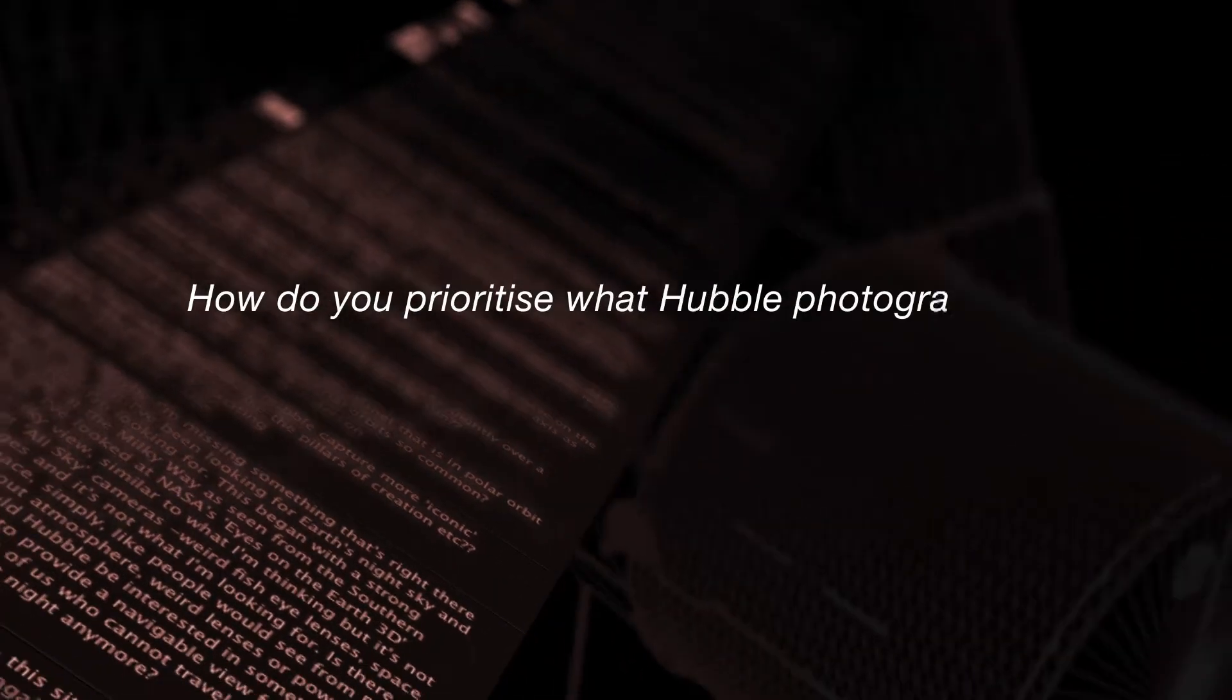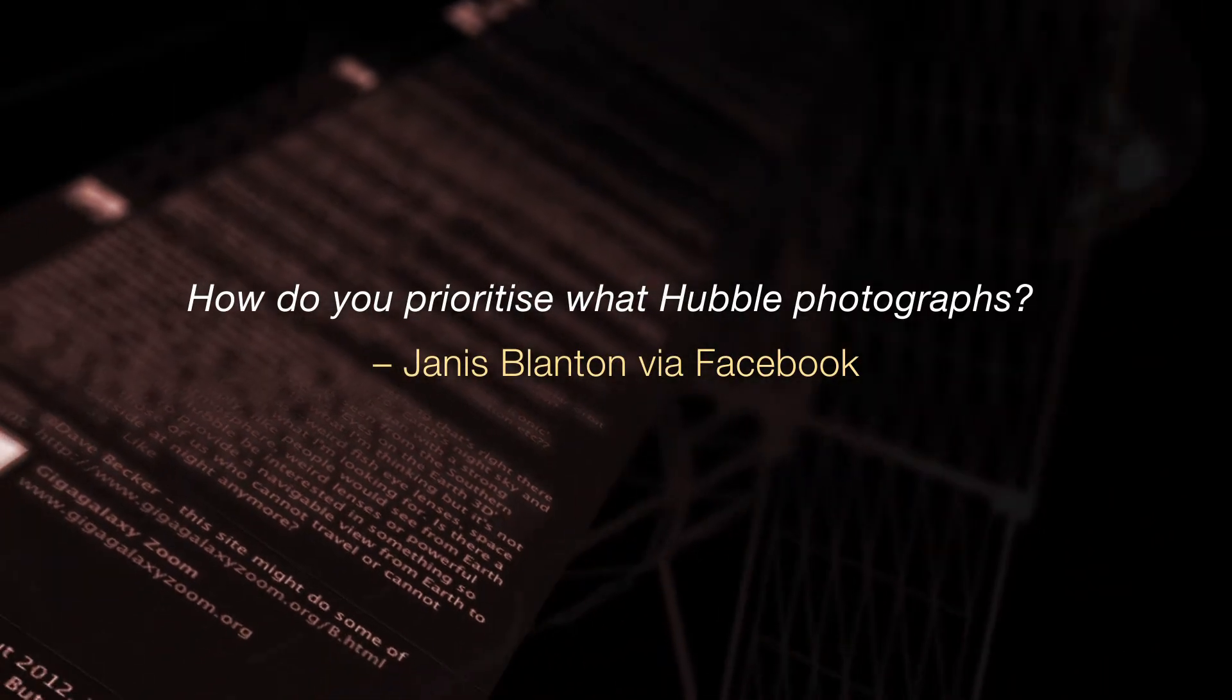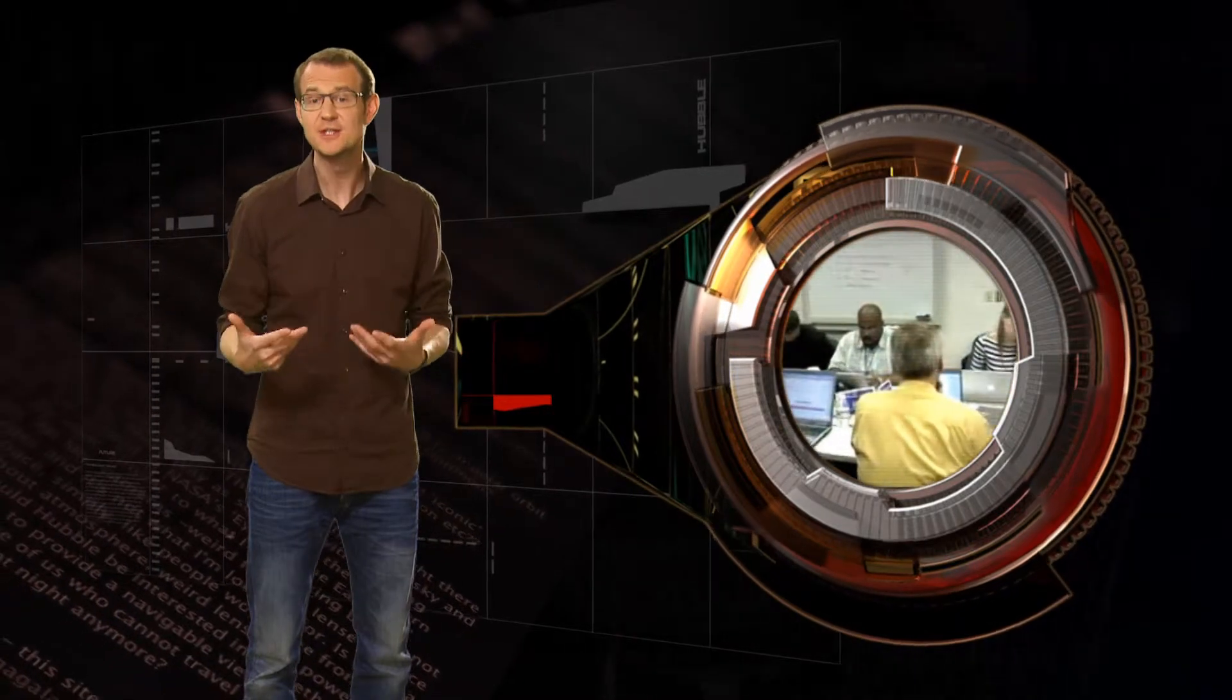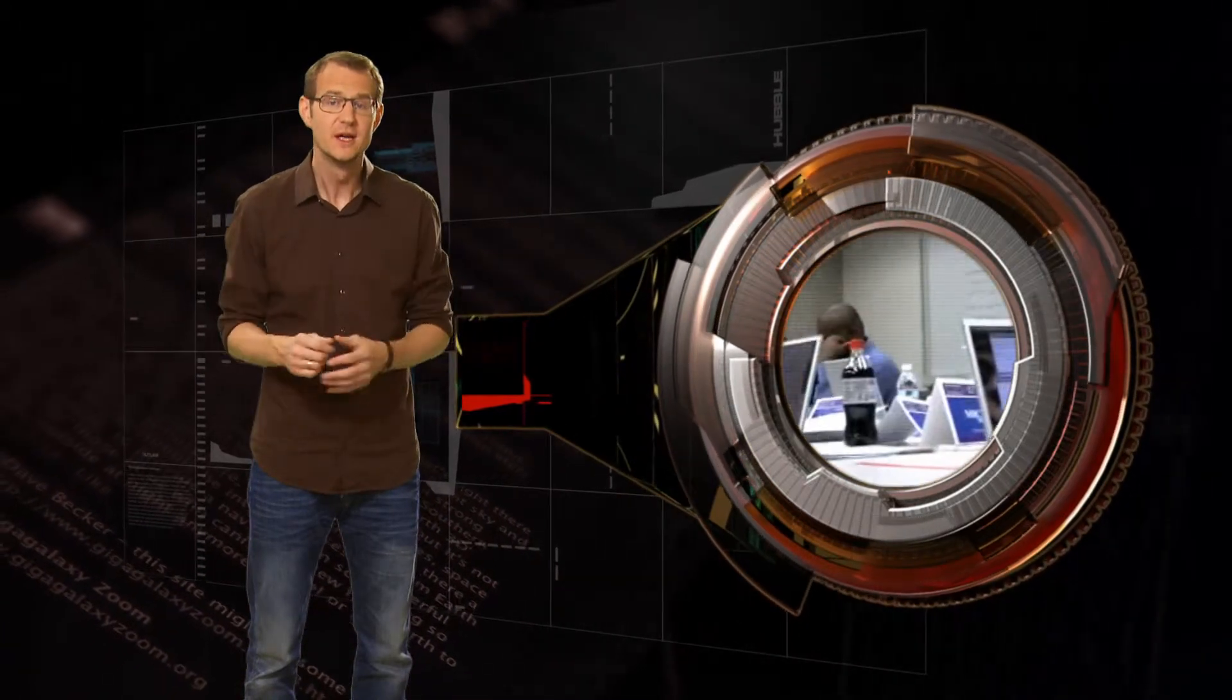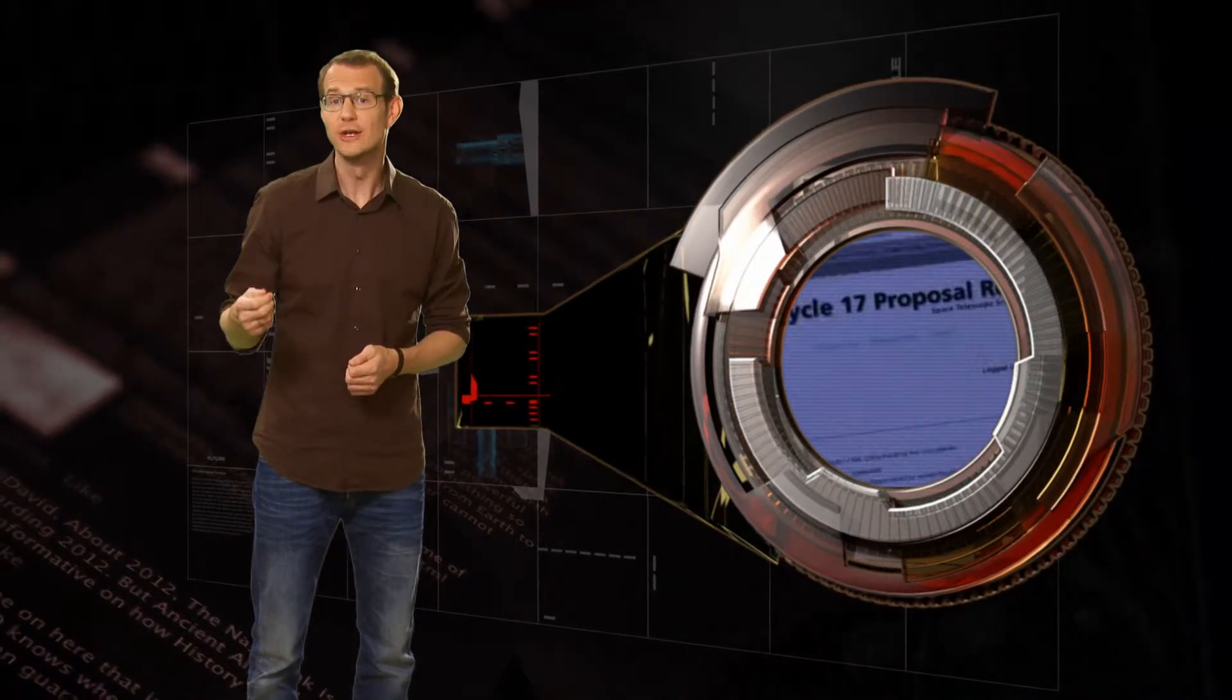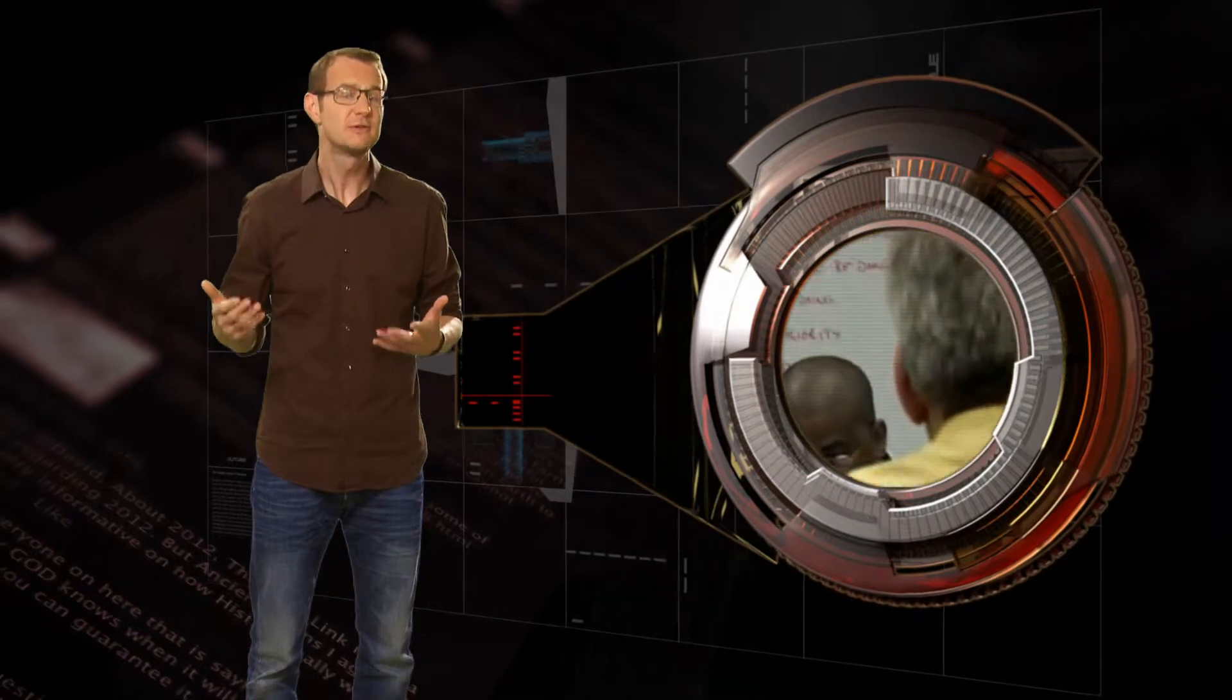How do you prioritize what Hubble photographs? Once a year, all the astronomers that want to use Hubble apply for observing time by submitting proposals that contain detailed descriptions of the scientific questions they want to address and the data they need. The total amount of observing time requested by all of the proposals is always much greater than the total amount of time that is actually available. So there's a committee of astronomers that looks at all the proposals and ranks them according to their scientific merit. And it's only the best 10-15% of the proposals that actually get executed.